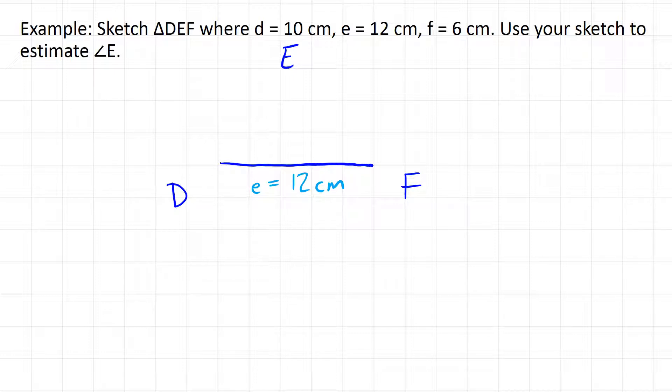So we're told that f is only 6 centimeters long and d is longer at 10 centimeters. e is going to be our longest side. So f is going to be short and across from capital F. This is going to be a shorter side, maybe something like that. It has to be about half the length of 12 centimeters. And then lowercase d would connect those two sides across from big D. So there's our lowercase f, there's our lowercase d. And we can label those. f is 6 centimeters.